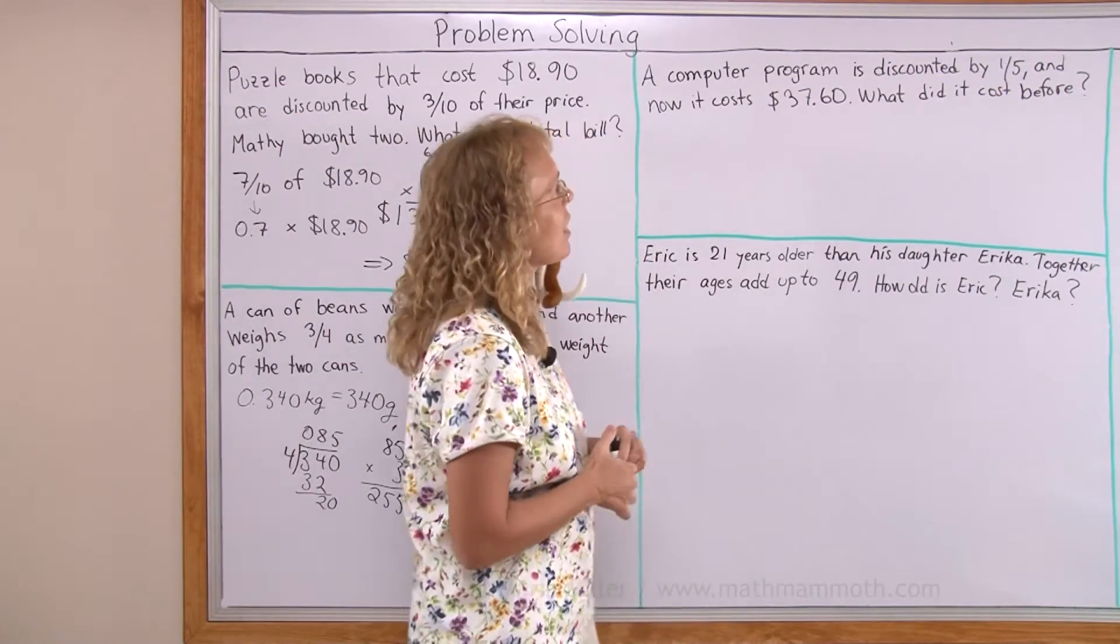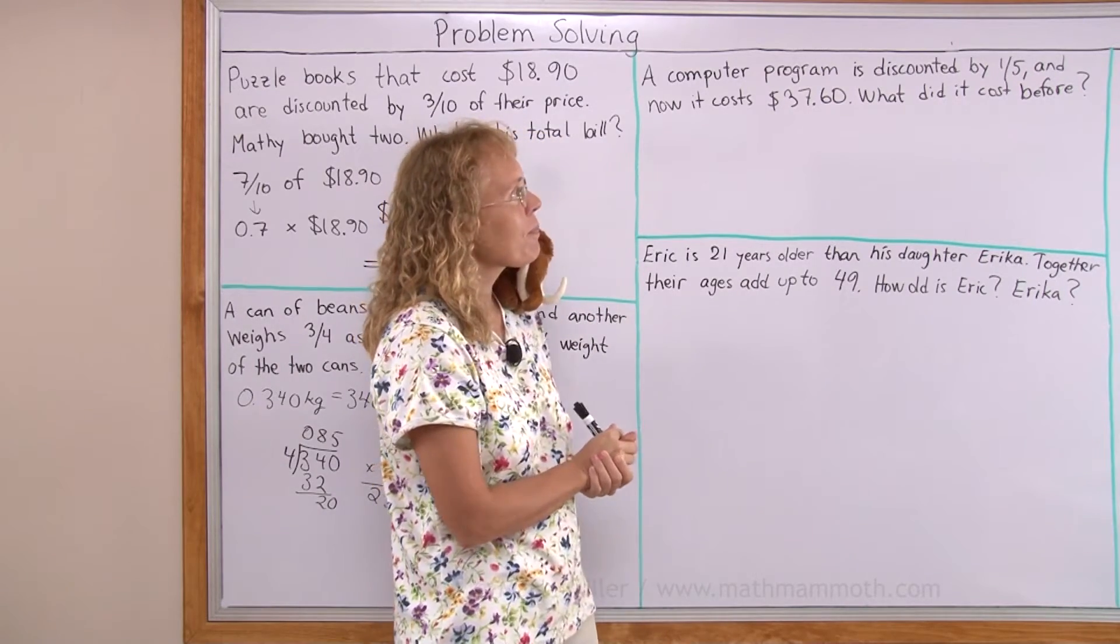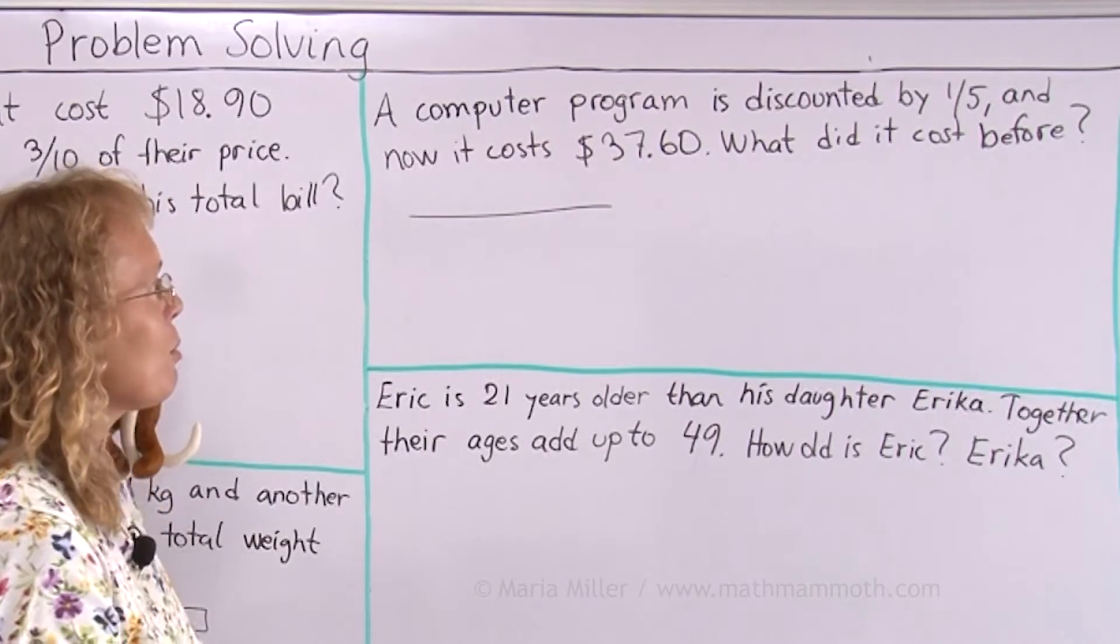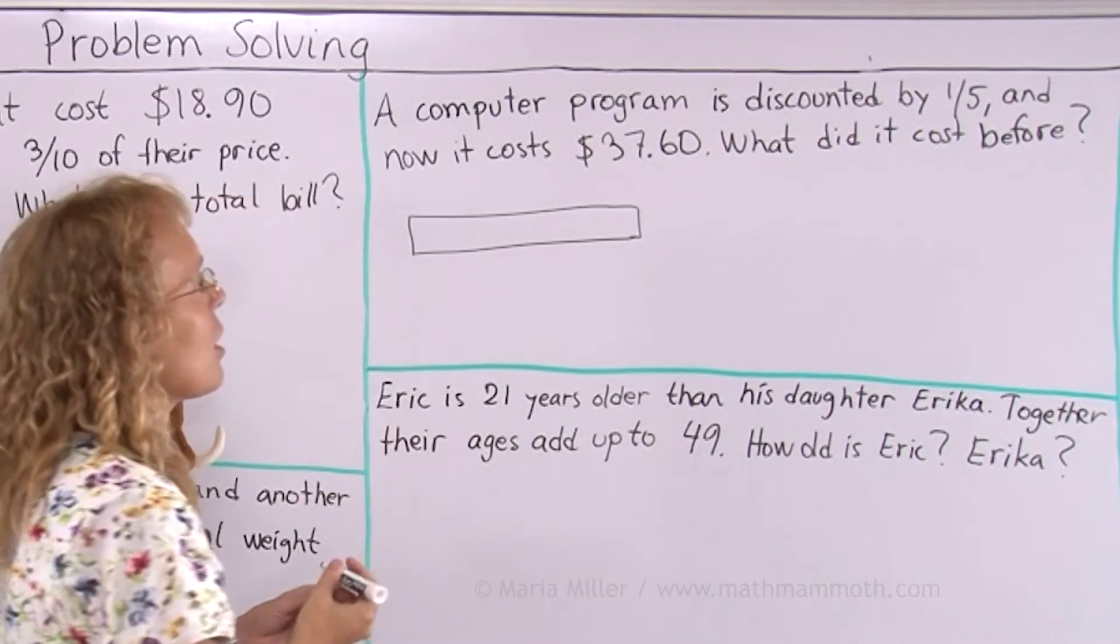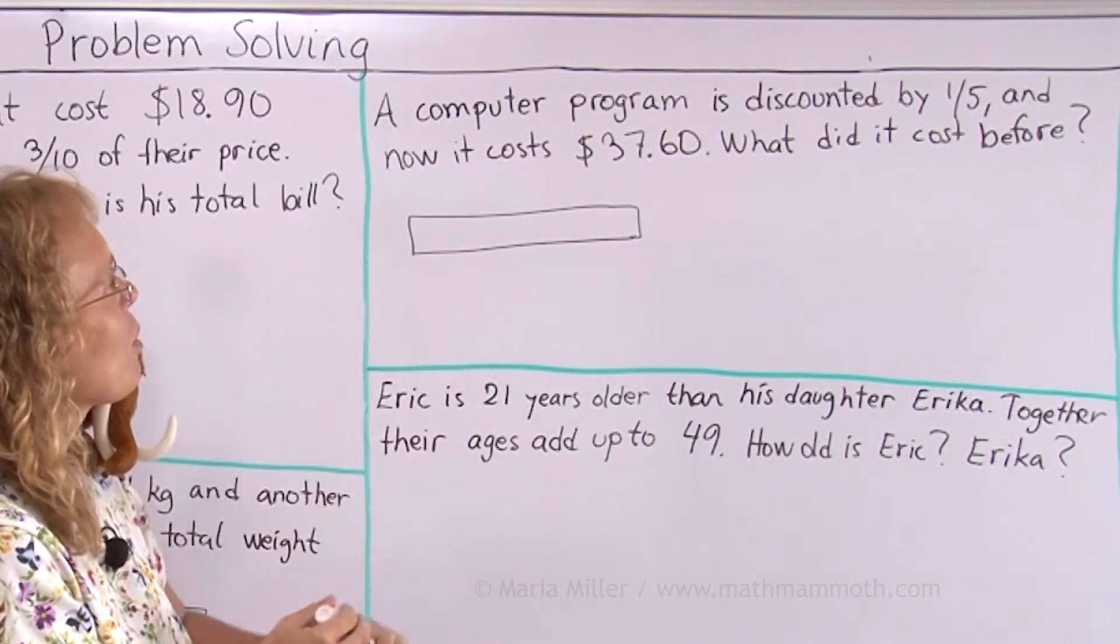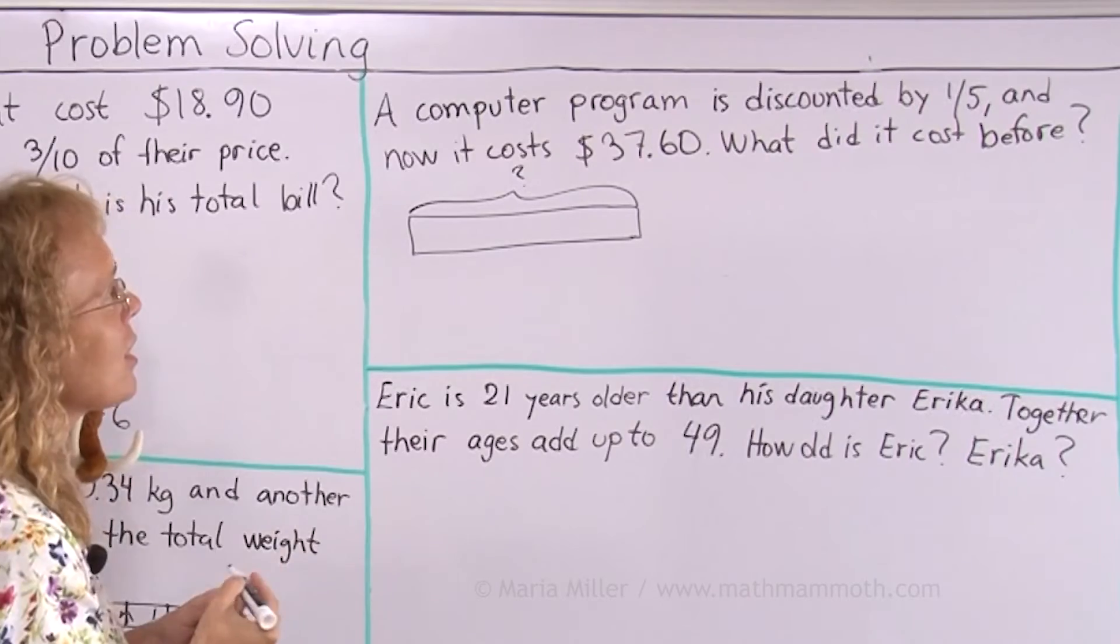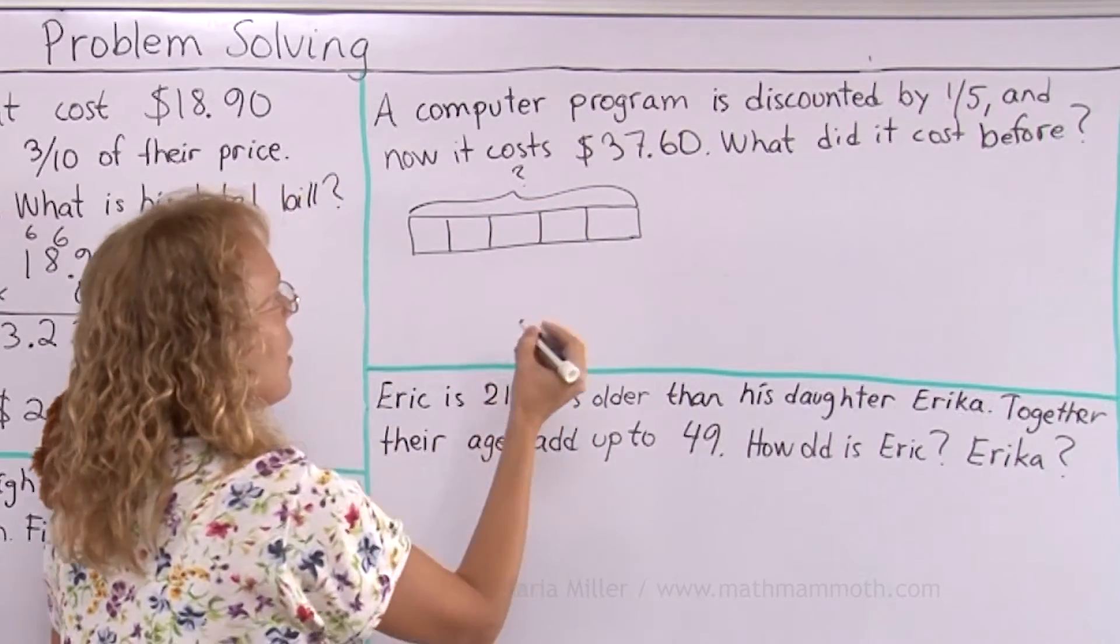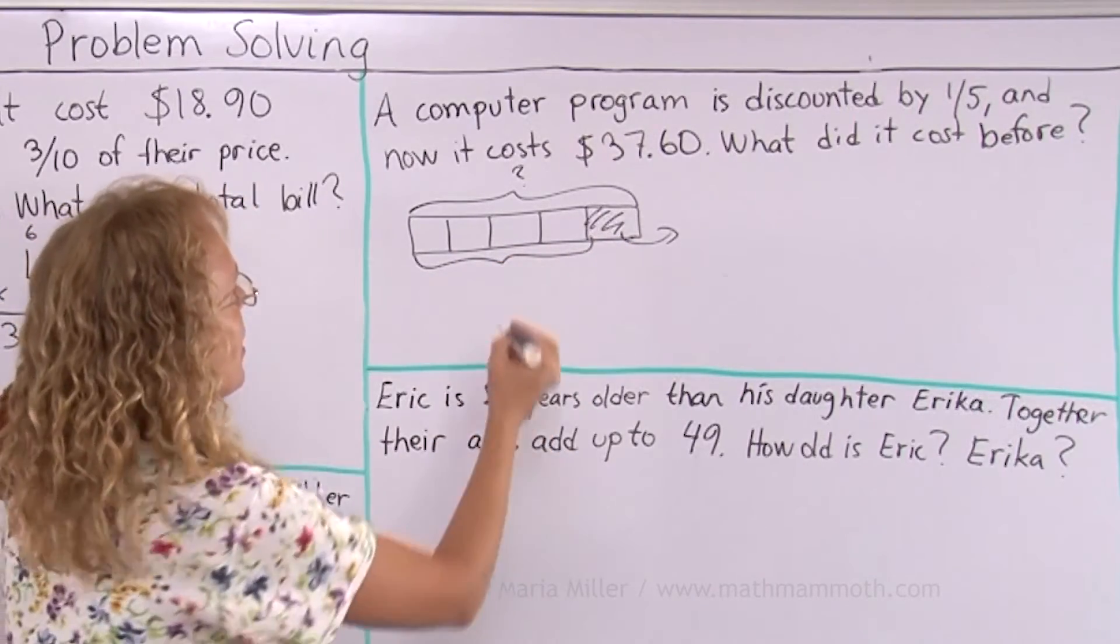A computer program is discounted by one-fifth of its price and now it costs $37.60. What did it cost before? I'm going to draw this bar diagram here to help us with this one. In it you want to draw a bar for the total amount usually. So let's see this is the total amount and you have the total amount and it is discounted and then we know the price that is left. So this is what we don't know, the price originally, and it is discounted by one-fifth. So let me divide this into five parts and then this part of the price is taken out and then what is left is four-fifths of the price and we know how much that is.